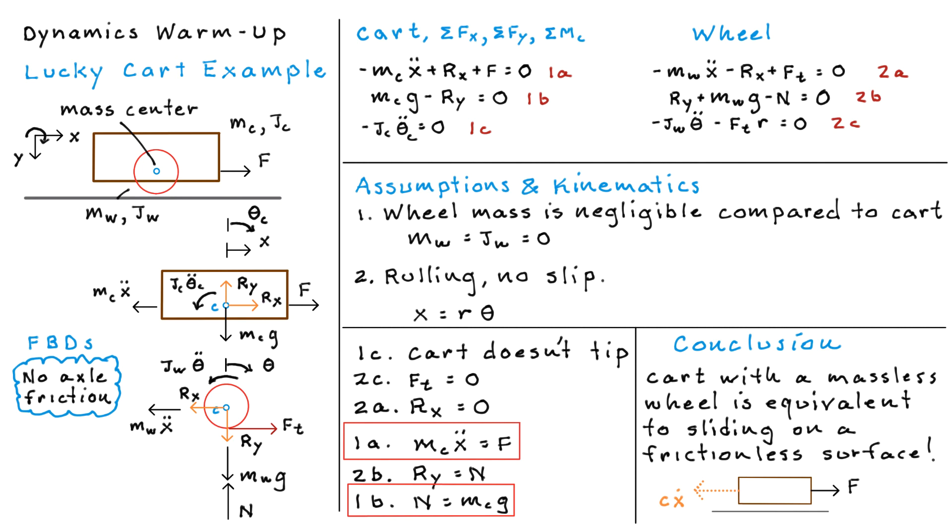So in summary, just a real basic example of a dynamic system that's both translating and rotating, and hopefully demystifying or giving some additional meaning to this notion of sliding on a frictionless surface. So I hope that helped. Thanks for watching. Bye-bye.